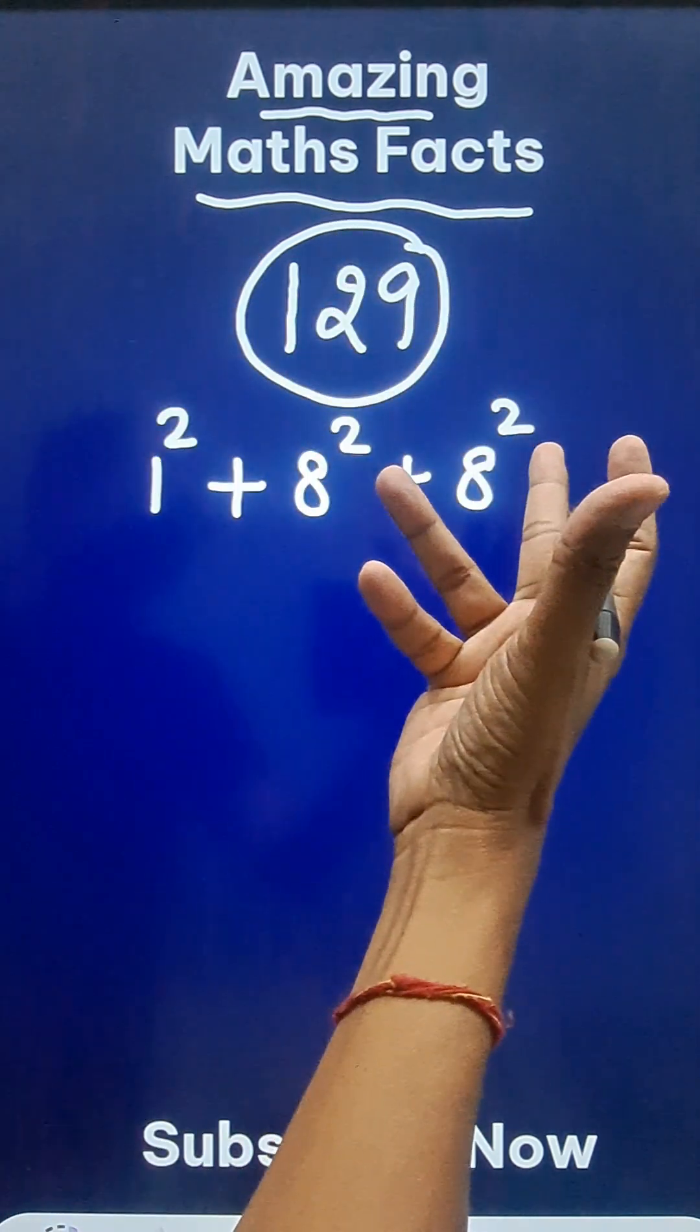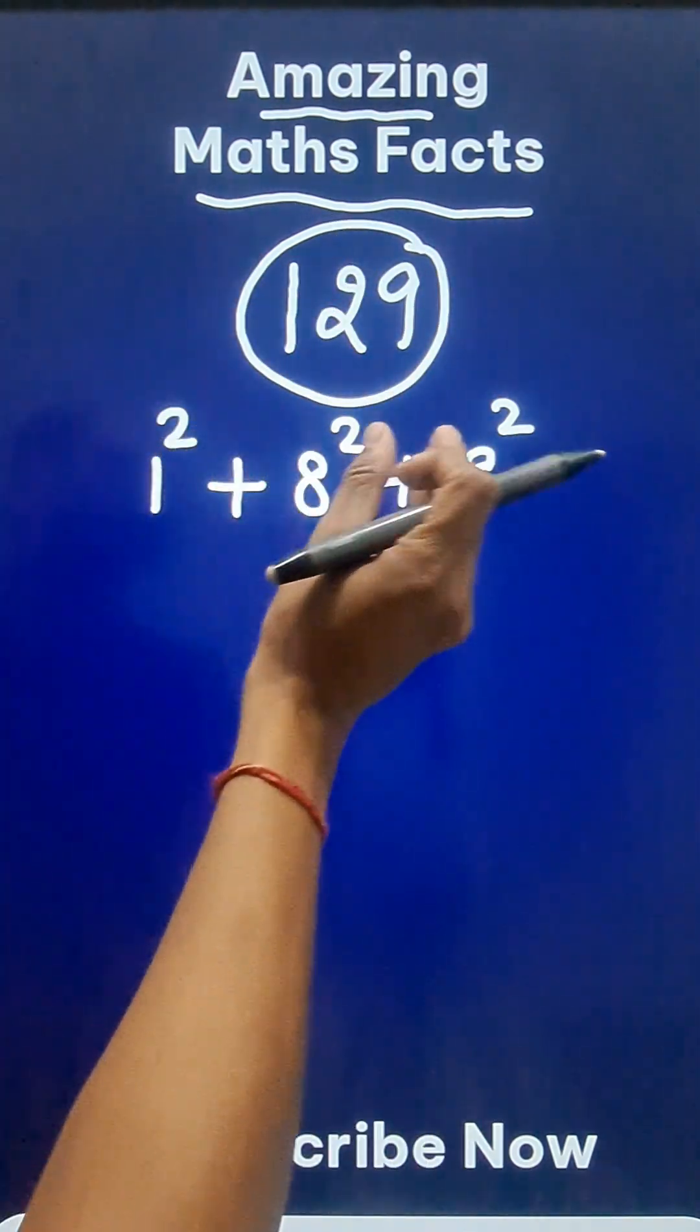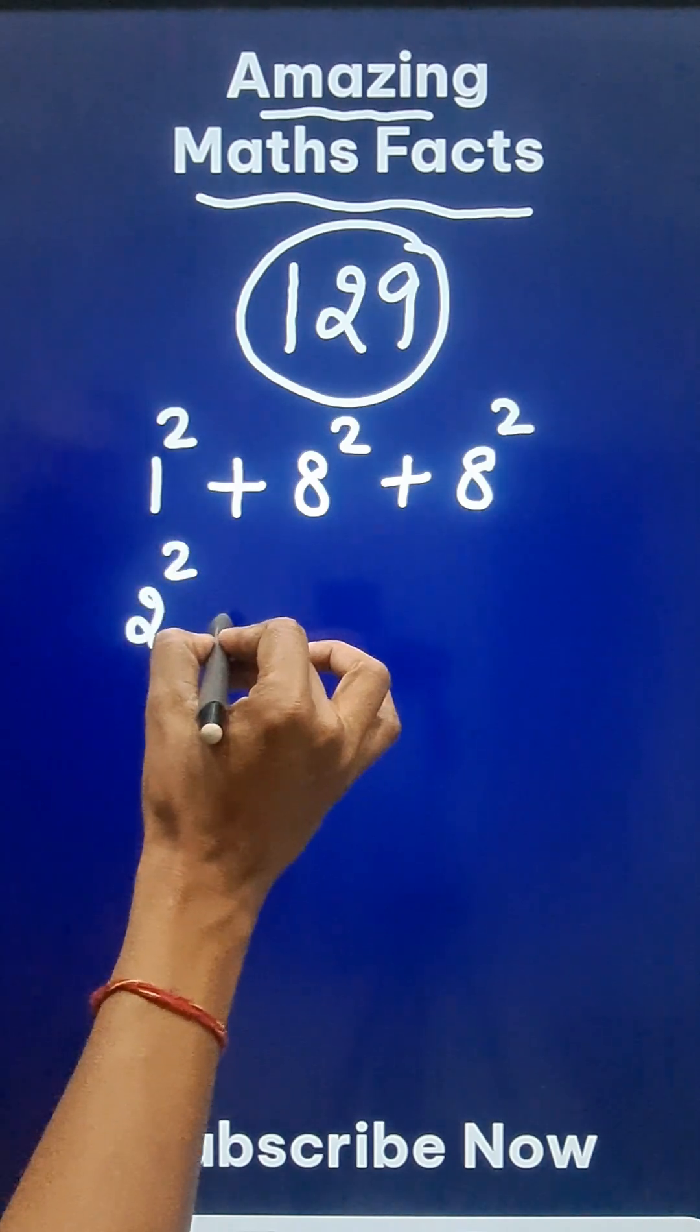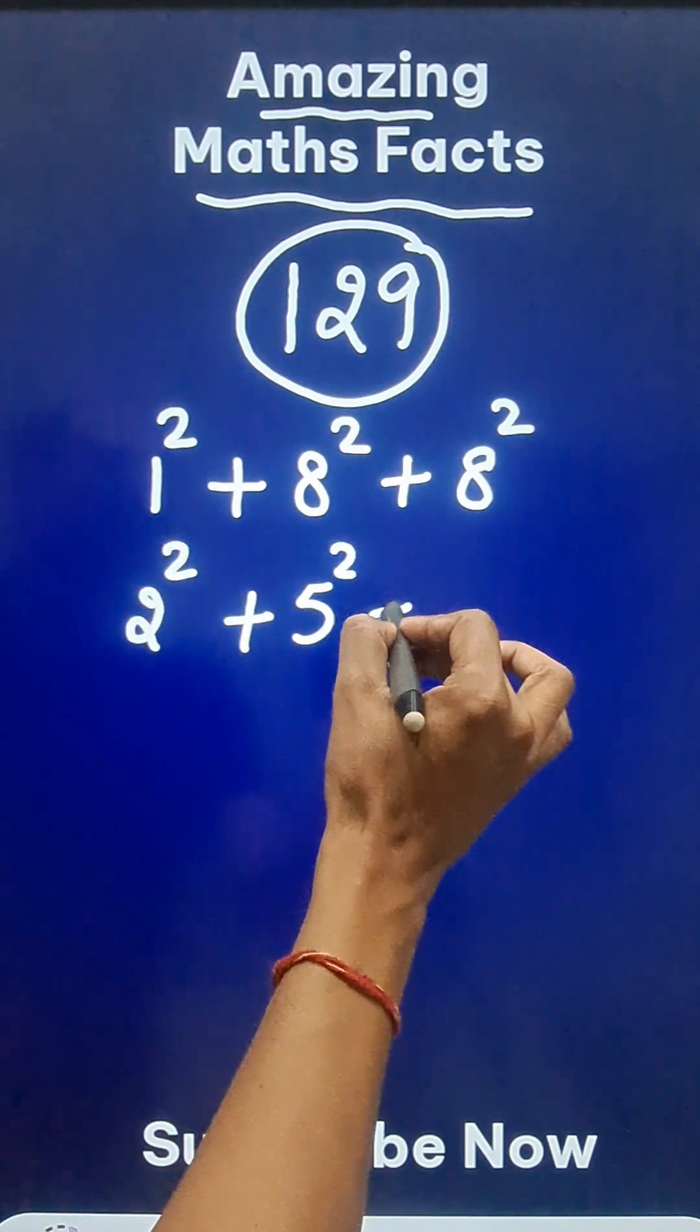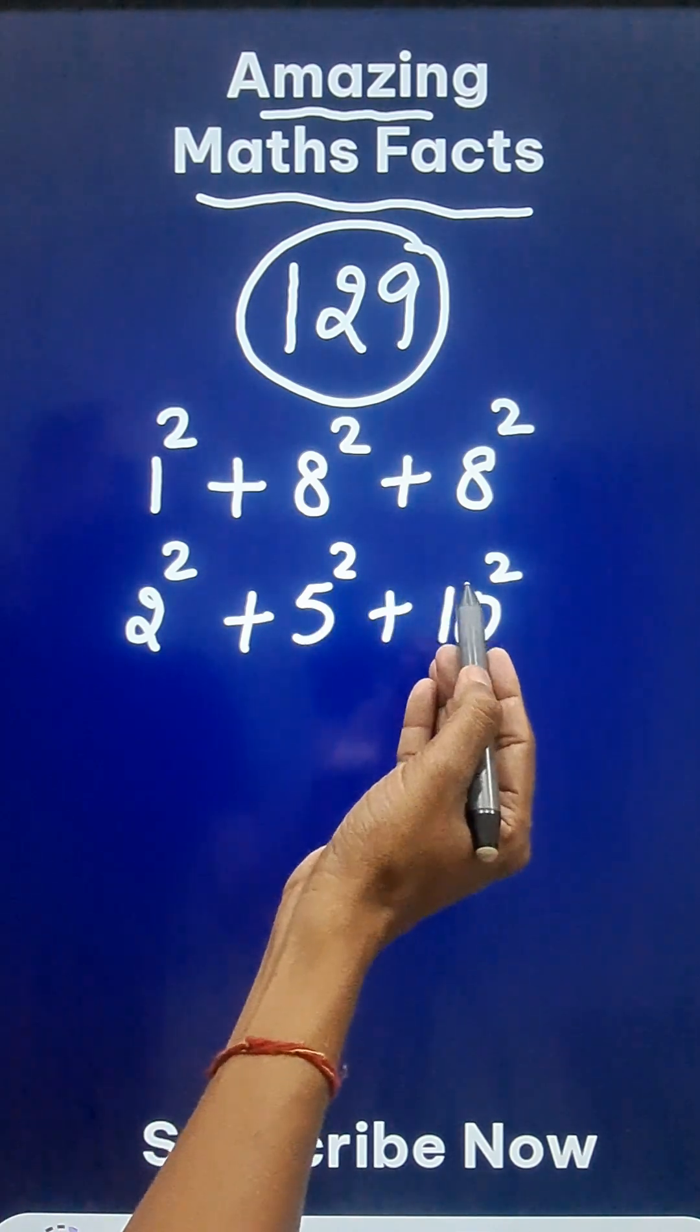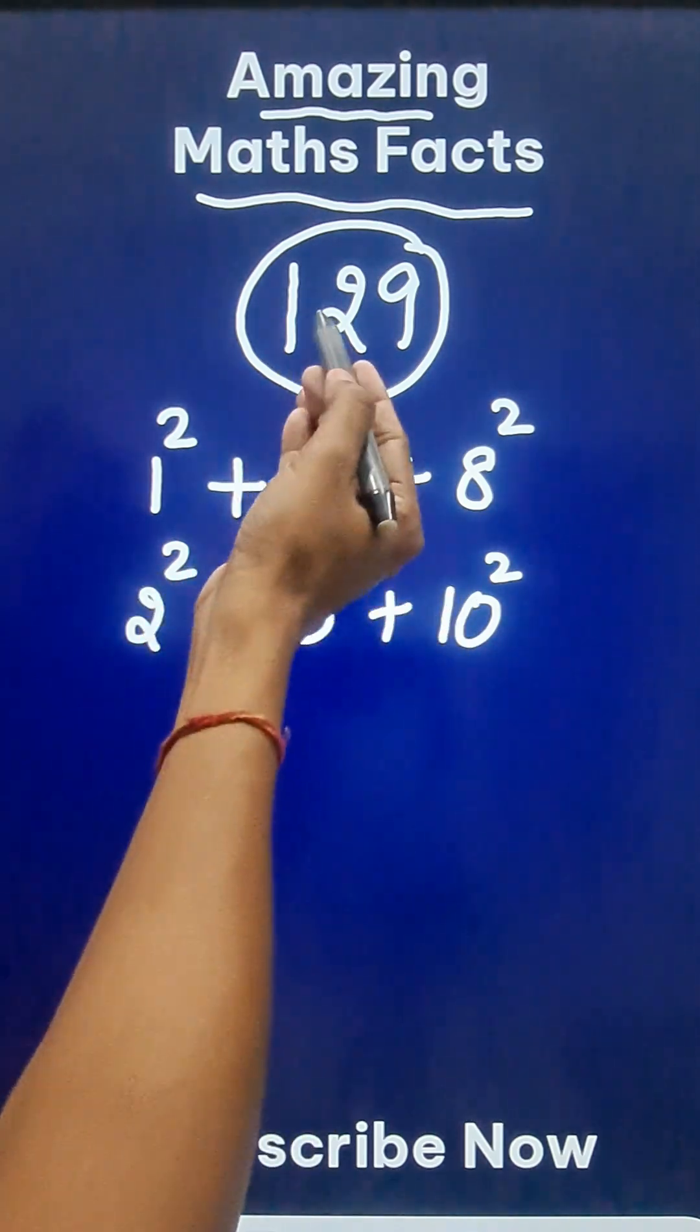There may be so many numbers which are the sum of squares of three different numbers but look at this. What about doing 2 square plus 5 square plus 10 square? This is 4, this is 25 and this is 100. So 125 plus 4 is 129 again.